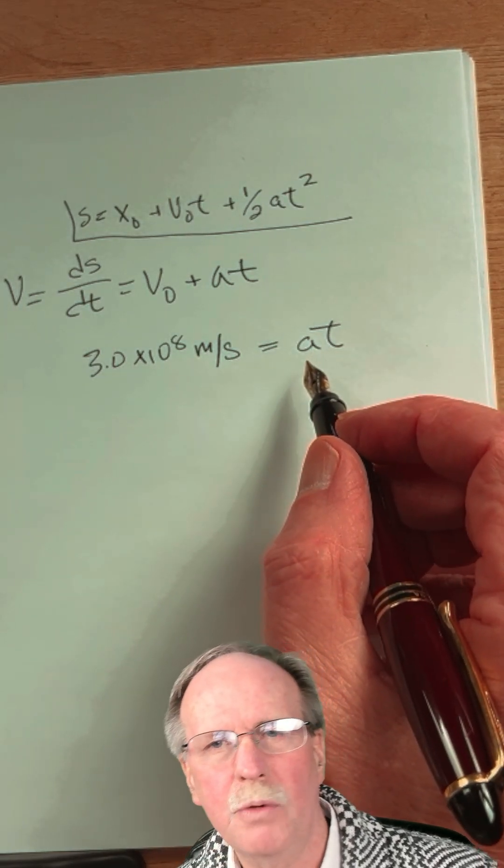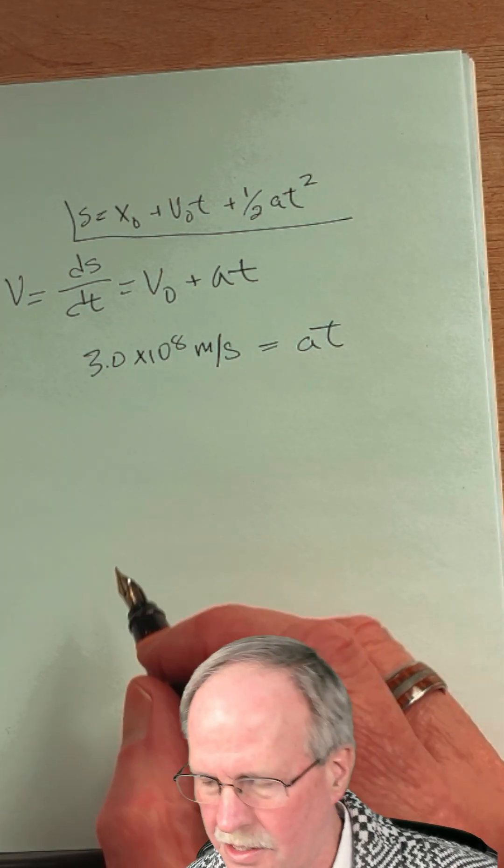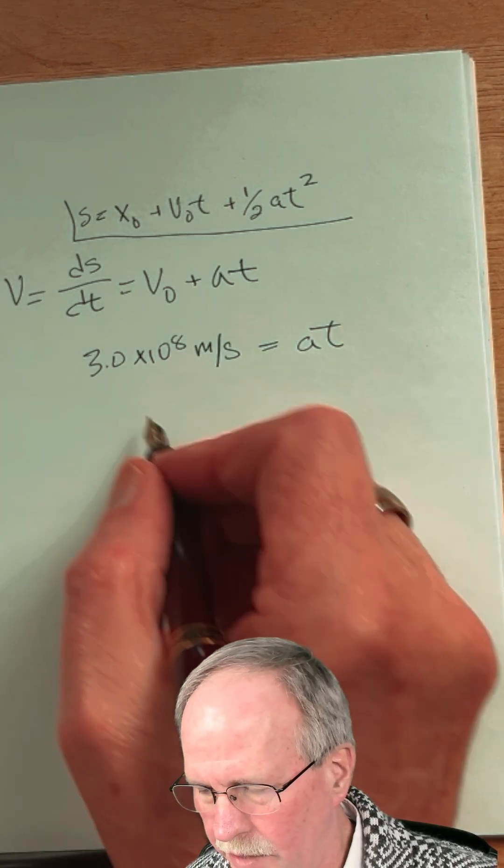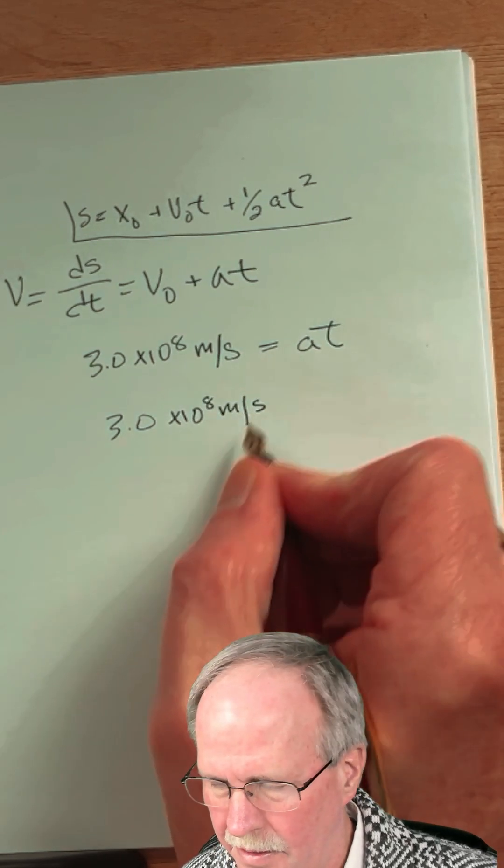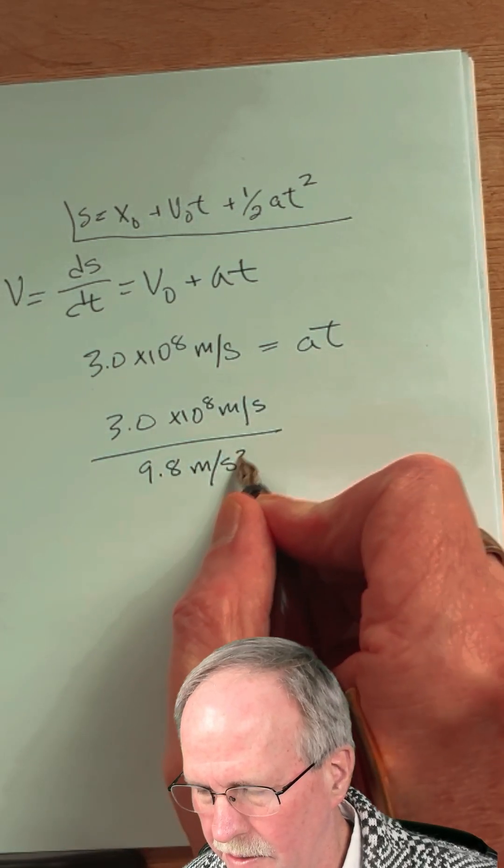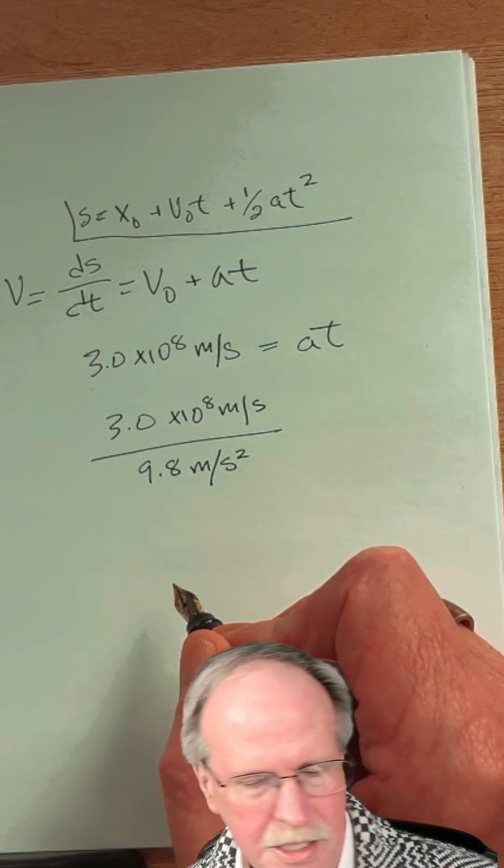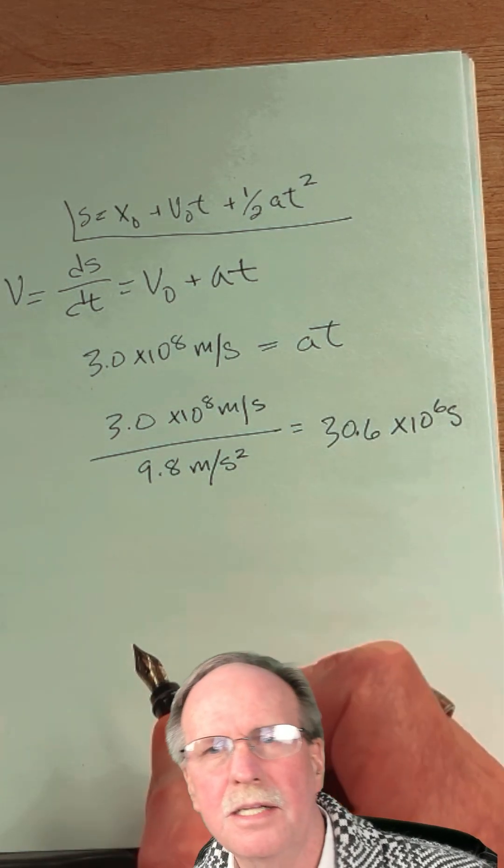The acceleration is 9.8 meters per second squared. We can solve for the time in seconds. So we'll take 3.0 × 10⁸ meters per second, divide it by 9.8 meters per second squared, and this will give us our answer in seconds. This works out to 3.06 × 10⁷ seconds.